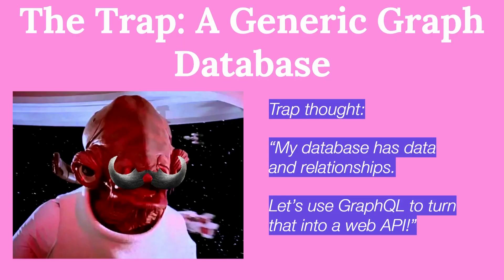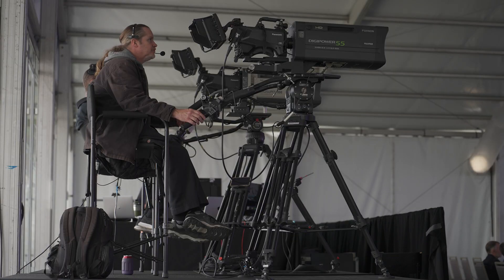Our next trap is a generic graph database. A trap thought you might have is: my database has data and relationships, let's use GraphQL and turn that into a web API. But databases aren't great for hosting business logic, and they also store data that you don't want on the internet. So you'd need a place to choose what goes in the schema and transform that data, which is business logic. To avoid the trap, introduce a dedicated business logic layer between your storage layer — your database — and your web API layer, GraphQL.